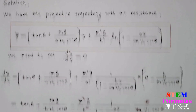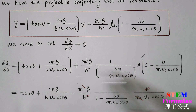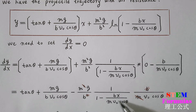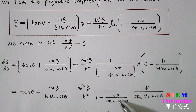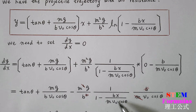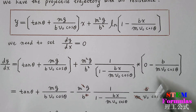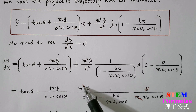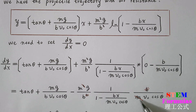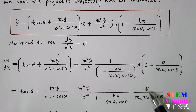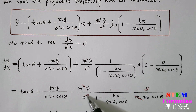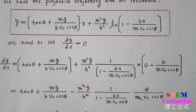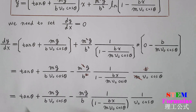Now we simplify this expression. We notice that here we have m squared on top and m on the bottom, so the extra m cancels. Similarly, b squared on top and b in the denominator cancel one factor of b. So the new simplified equation is obtained.